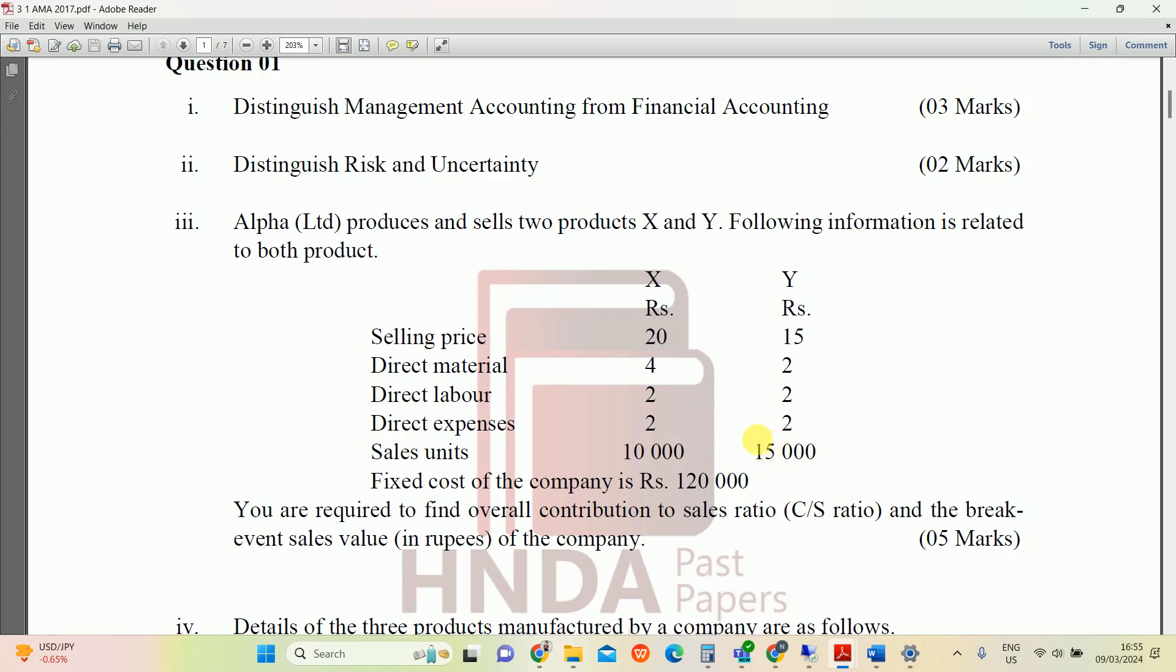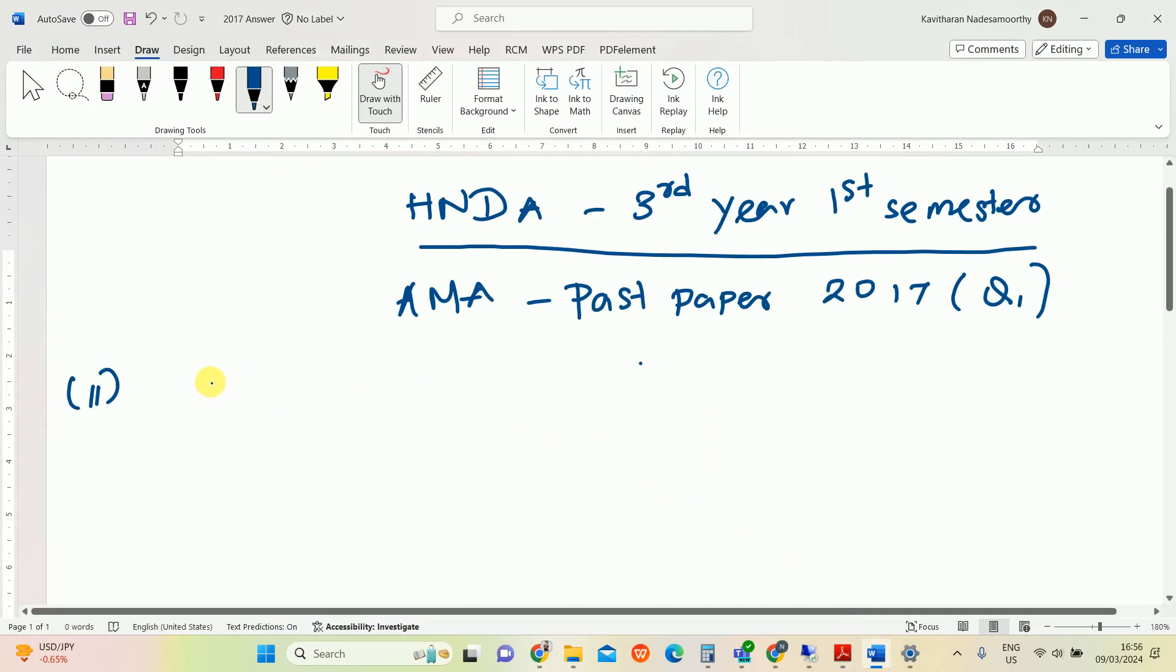You are required to find out the contribution to sales ratio (C/S ratio) and the break-even sales value in rupees of the company. So we need to calculate two things: first is C/S ratio, second one is break-even sales value in rupees. Let's calculate first C/S ratio.